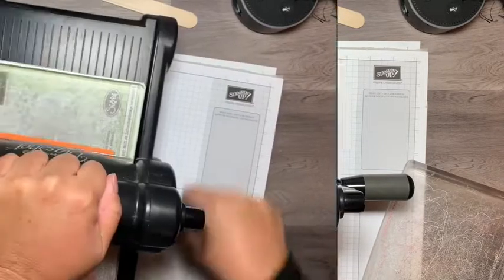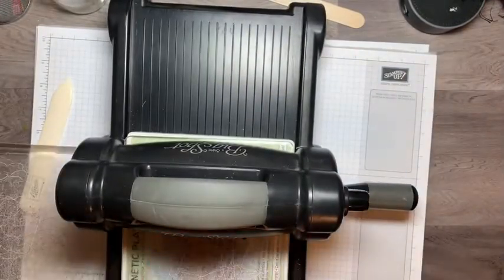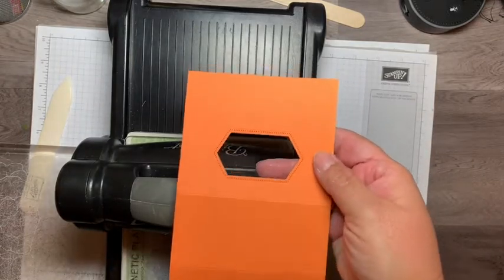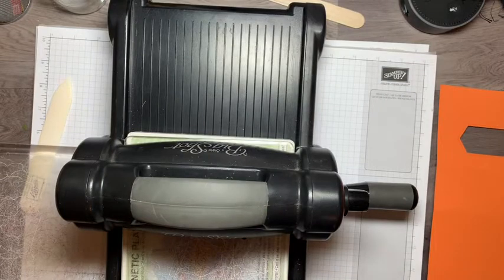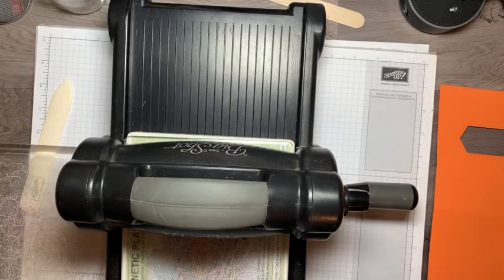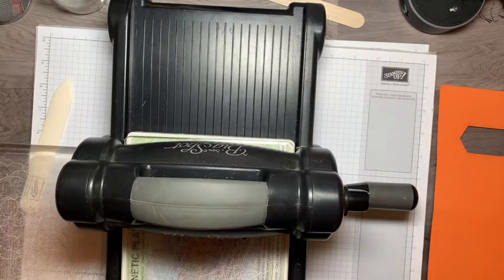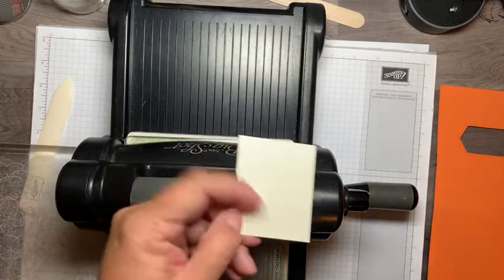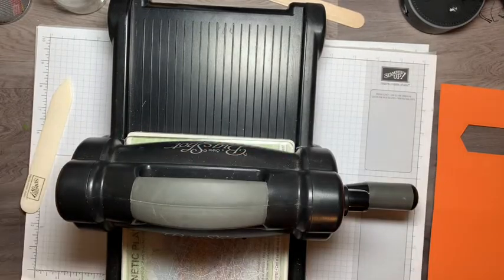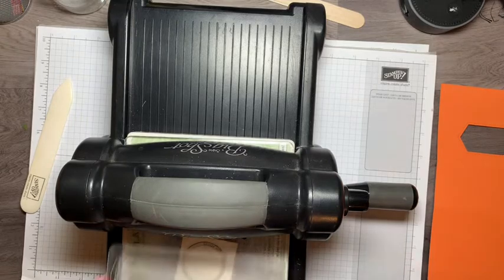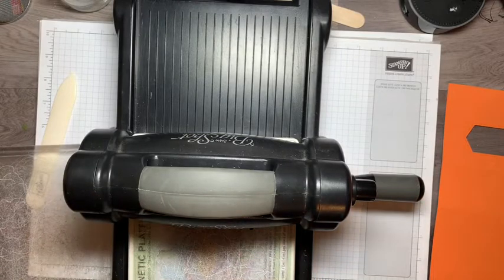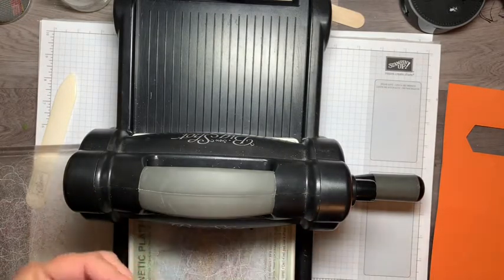Now since we have the die machine out, let's go ahead and cut out a couple of pieces. On the Very Vanilla cardstock, I'm cutting out a little circle. These are from the Layering Circles die set. Then with the same die set, I've got the little scalloped edge circle I'm going to cut out.